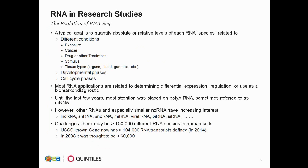If you look at RNA in research studies, a typical goal for RNA is to quantify absolute or relative levels of each RNA species related to different conditions. These conditions may be related to understanding particular diseases such as cancer, trying to understand exposure to different elements, examining the effects of treatments or particular drugs, or looking at different expression within different organs or types of cells — for example, blood or PBMCs. They can also be examining RNA in the development phases of particular organisms, as well as cell cycle phases.